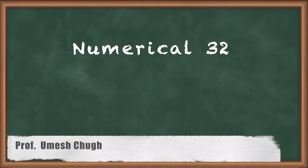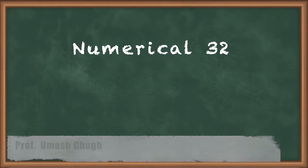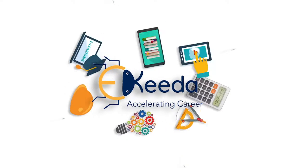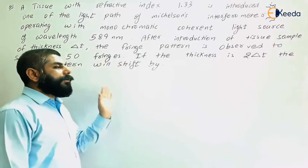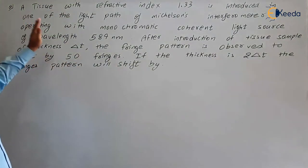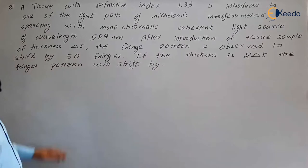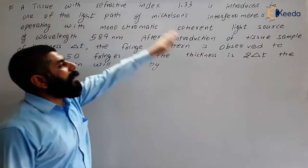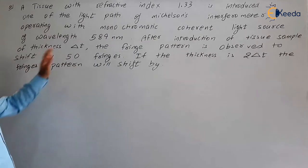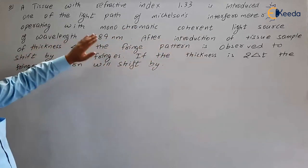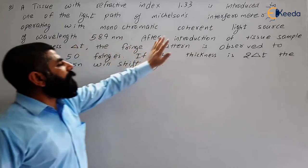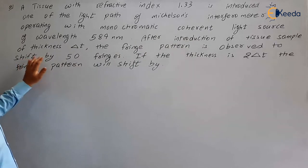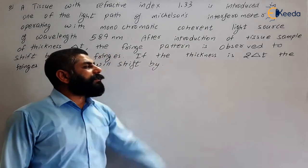Hello students. In this video I am going to discuss a numerical based on an interferometer. A tissue with a refractive index of 1.33 is introduced in one of the light paths of a Michelson interferometer operating with a monochromatic light source. After introduction of the tissue sample of thickness δt, the fringe pattern is observed to shift by 50 fringes.